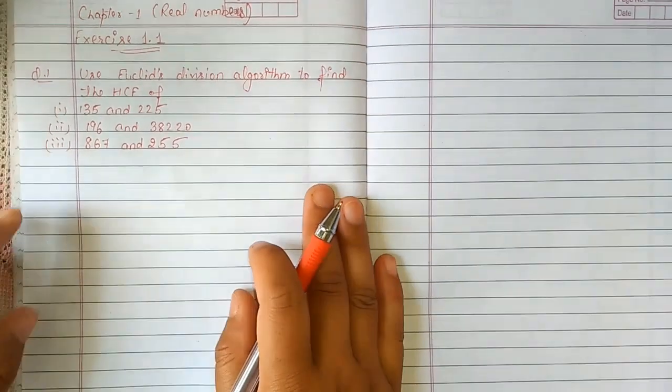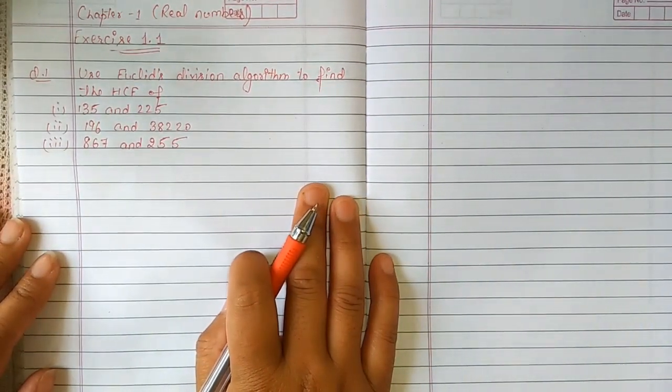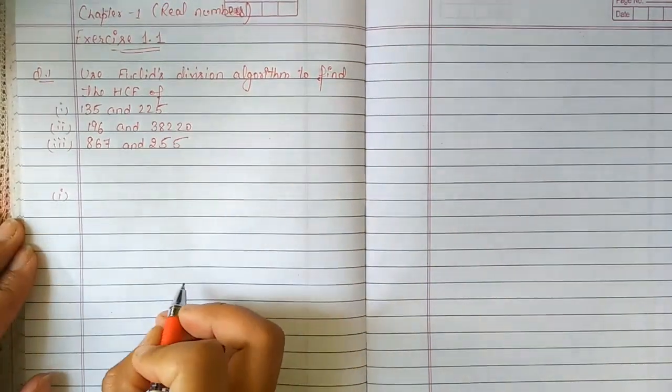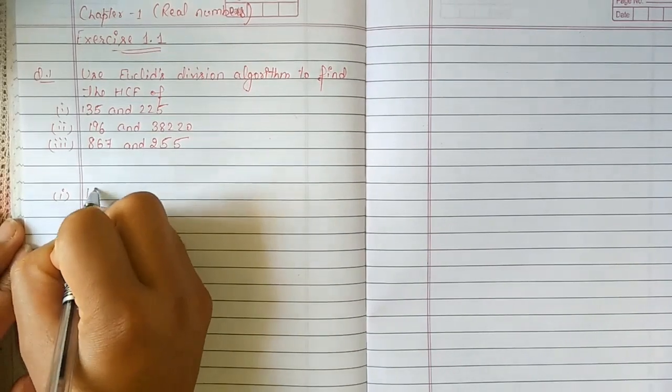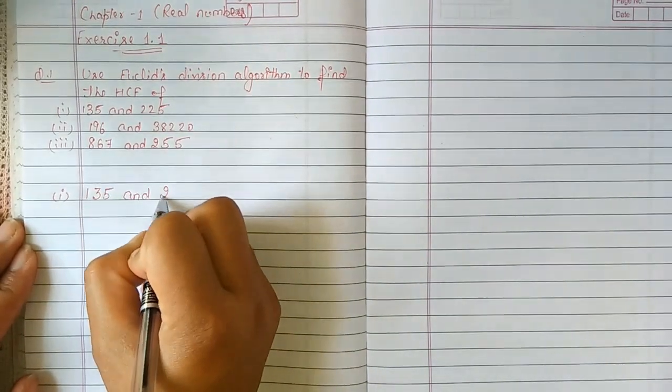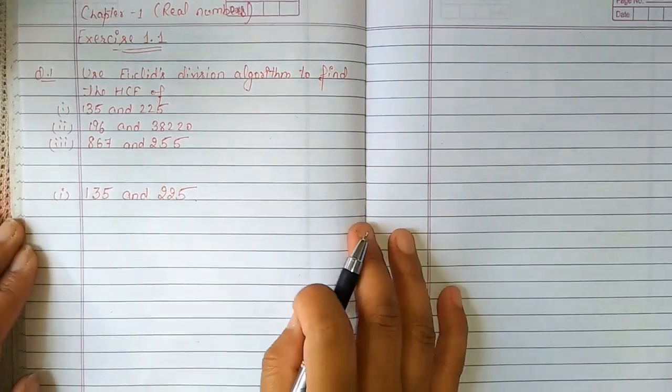Like yesterday, we told you how to use Euclid's Division Lemma and how to find HCF. First of all, we will start with the first question, that is 135 and 225. This is our first question.